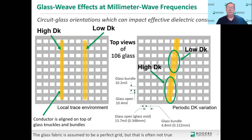The periodic Dk variation is unfortunately very hard to verify experimentally. The idea is: with the glass weave shown as a perfect grid and a signal conductor on an angle to the glass weave, in one area the conductor is over bundle-knuckle-bundle-knuckle regions — a high Dk region. Further along, the conductor is over open-bundle-open-bundle regions — a low Dk region. This creates a 'zipper effect' along the length of the conductor: high Dk, low Dk, high Dk, low Dk. At millimeter wave frequencies with short wavelengths, this Dk variation can be detected and is a significant issue.